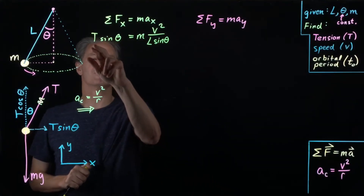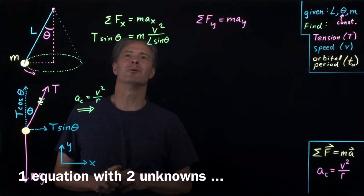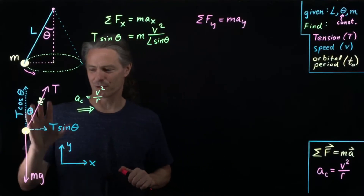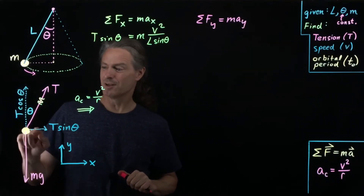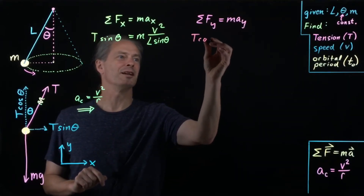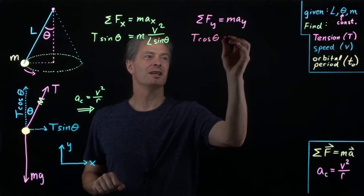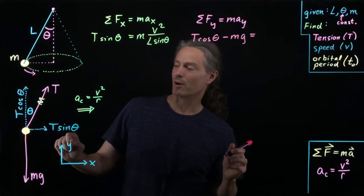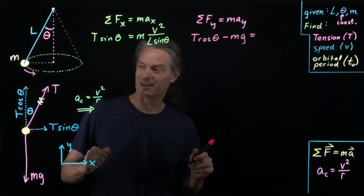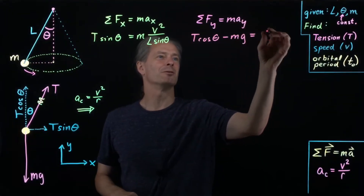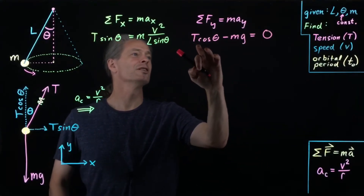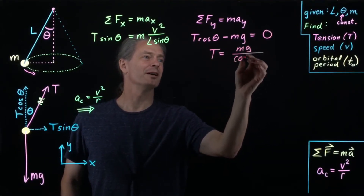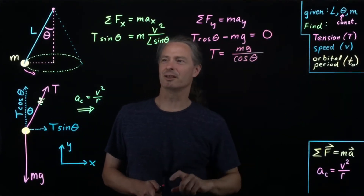Now looking at the y direction: the force components are T cosθ (positive y) and mg (negative y), and the mass has no acceleration in y. So T cosθ − mg = 0, which gives T = mg/cosθ. That's the tension in the cable.